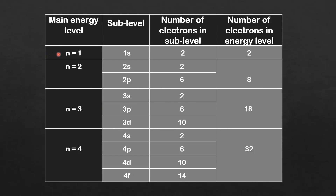Next we'll look at how many electrons each main energy level can hold. Starting with N equals 1: it has a 1s sublevel which can hold 2 electrons, so the total number of electrons in that energy level equals 2. Moving on to the N equals 2 energy level, it has a 2s which can hold 2 electrons and a 2p sublevel which can hold 6, so the total number of electrons in the energy level equals 8.